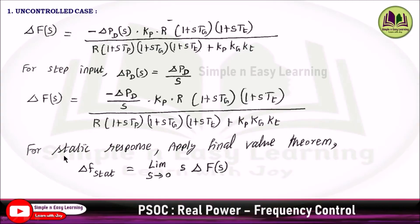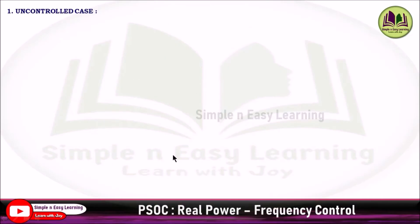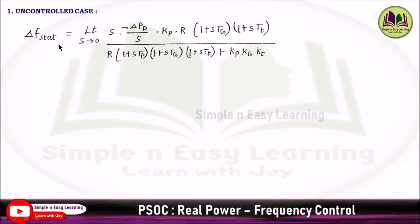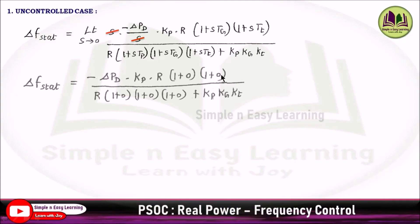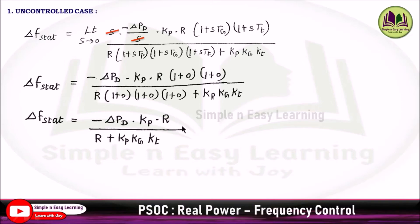For static response, apply the final value theorem: Δf_stat = lim(s→0) s·ΔF(s). Substituting into the previous equation, s and s cancel, and for the remaining s we substitute 0. The equation is then reduced by setting s = 0.